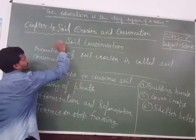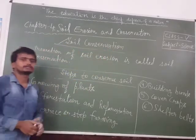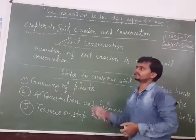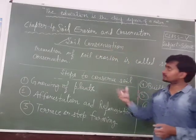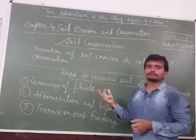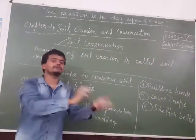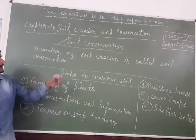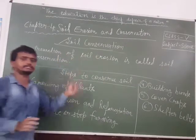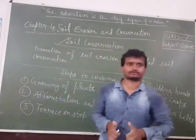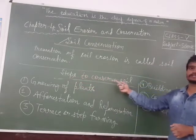Our next topic is soil conservation. Prevention of soil erosion is called soil conservation. It means to protect our topsoil from being eroded — to protect the topsoil from moving from one place to another due to wind or flowing water. Now let us see what steps we can take to conserve soil.